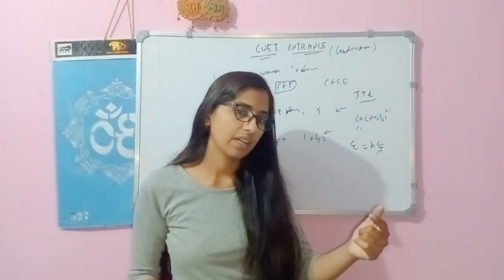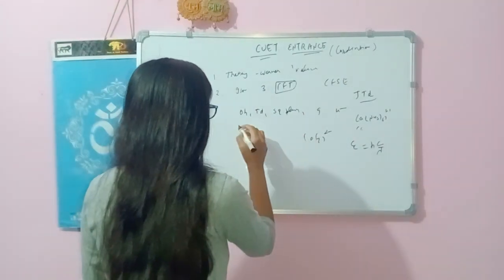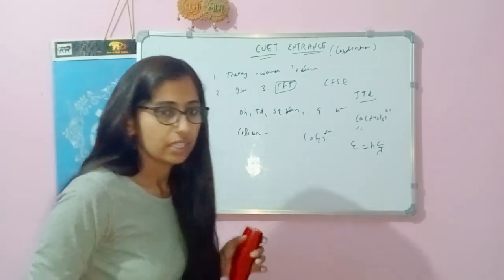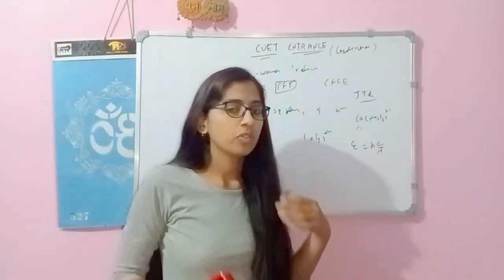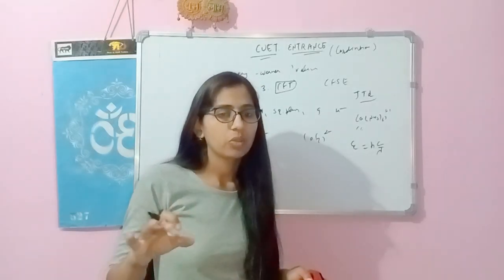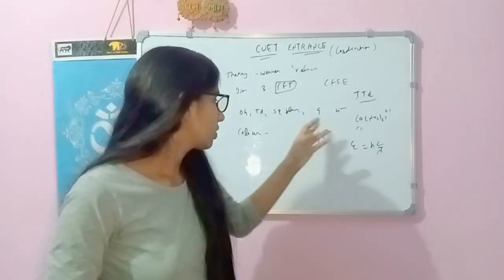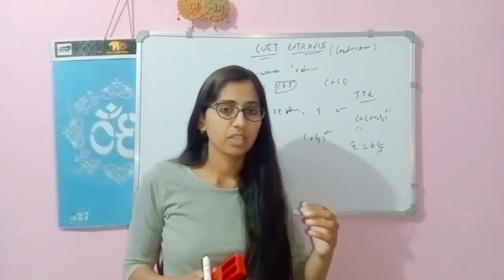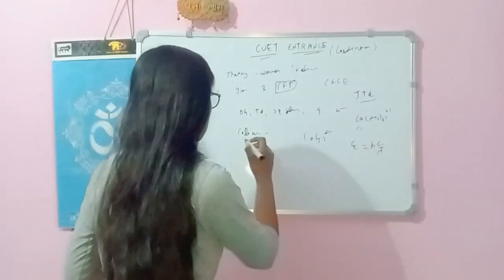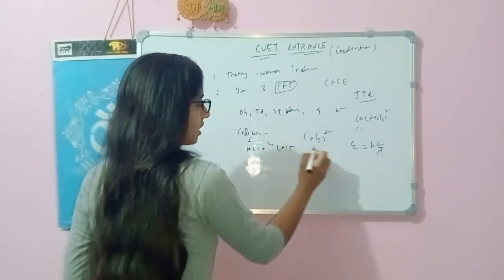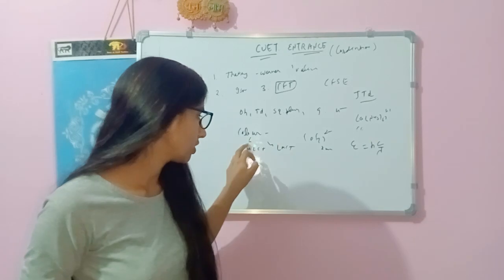Another question type is about the color of complexes. You can be asked about color transitions and why inner-transition metal complexes show different colors. For example, reading KMnO4 — its color arises from metal-to-ligand charge transfer (MLCT) or ligand-to-metal charge transfer (LMCT). We have discussed the charge transfer mechanism in detail in previous videos.